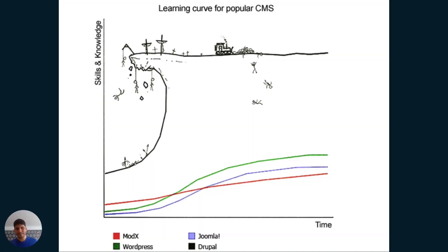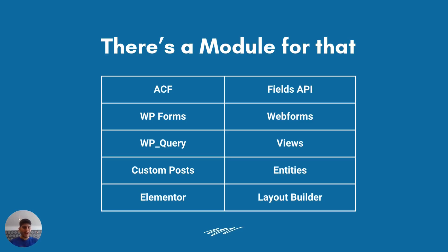Now, here's a great explanation of what they call the Drupal curve. Once you go in there and have that steep curve, but once you pass that steep curve, you're able to create really amazing solutions. Now, in Drupal, we have an expression called: there's a module for that.